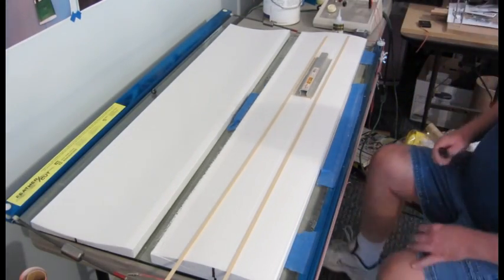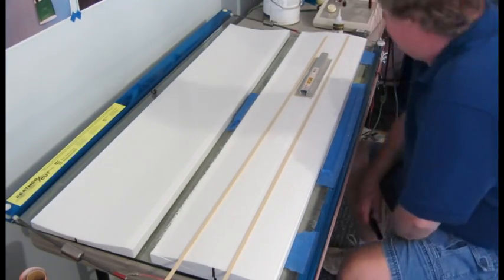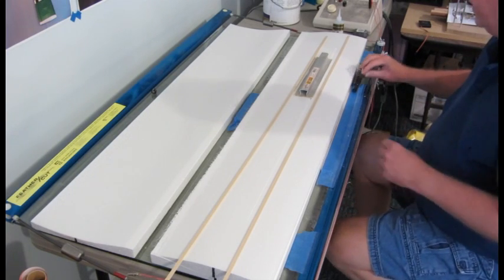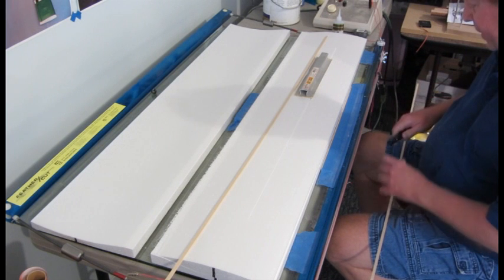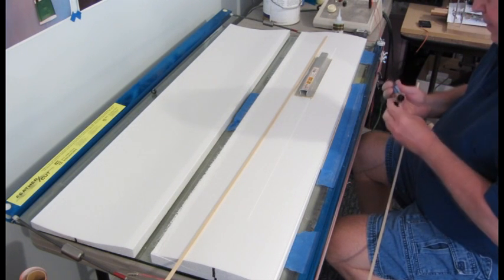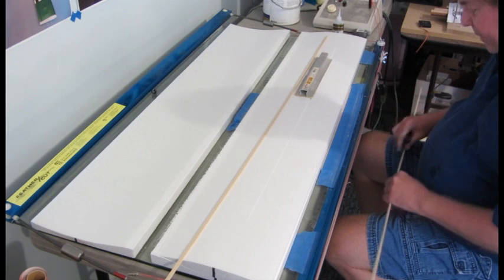Now I'm going to try putting spars into the wing. The slot is just barely big enough for the spar, and trying to push it into the foam can be just a little bit problematic with the sharp edges.